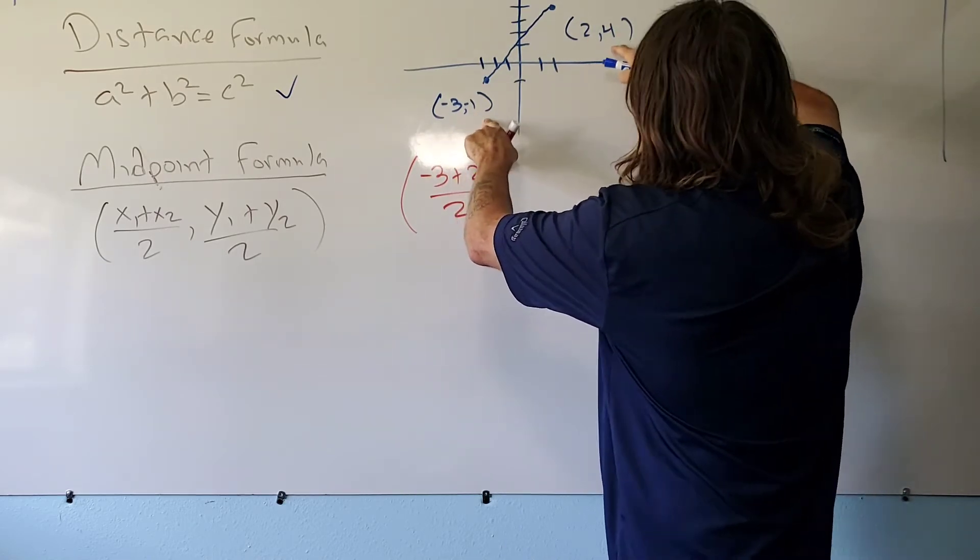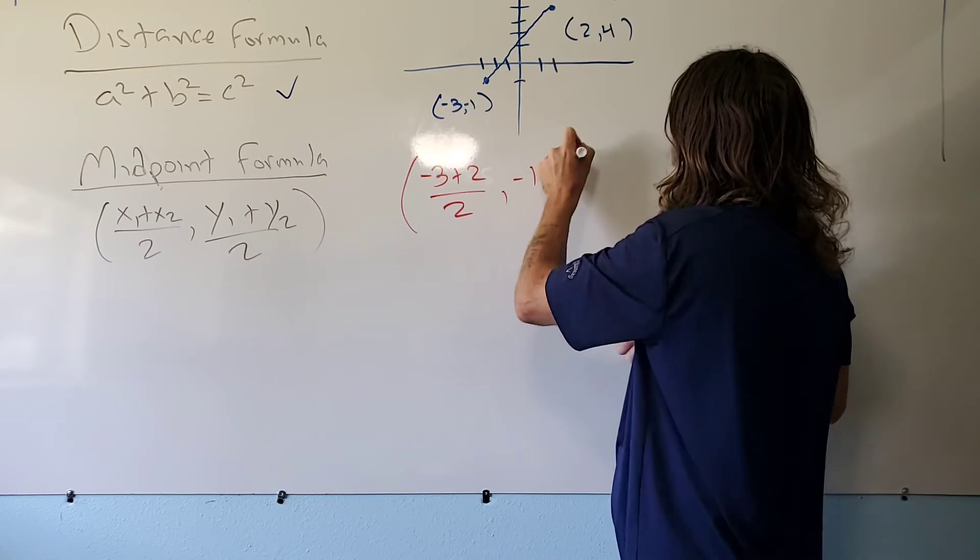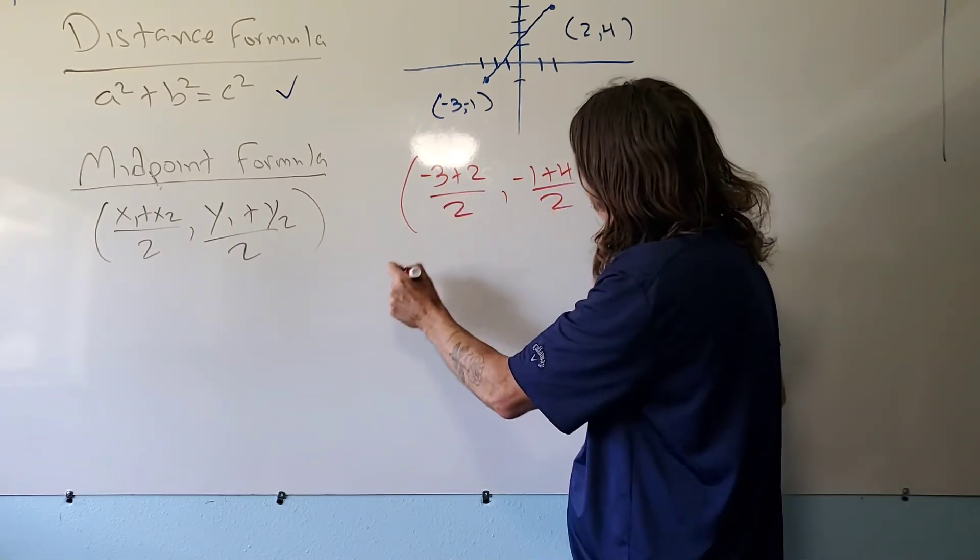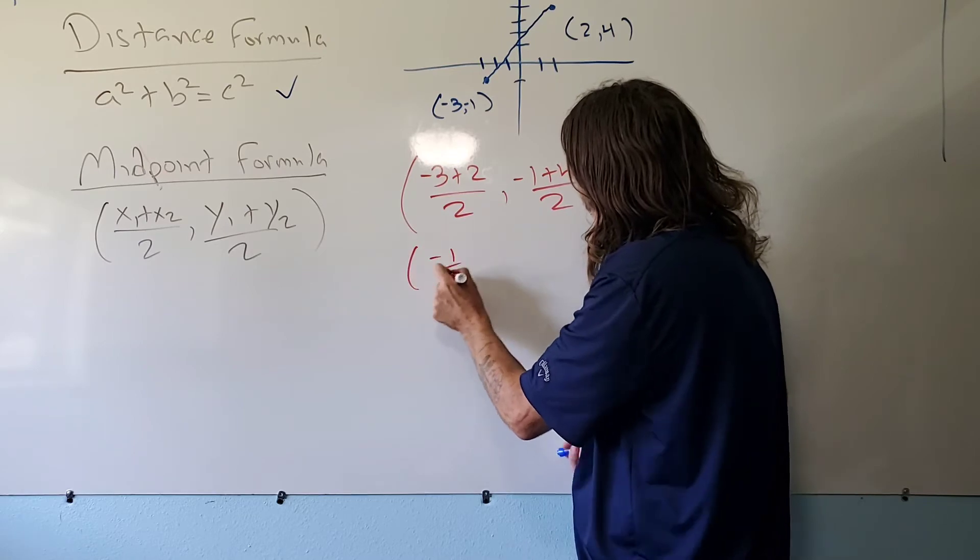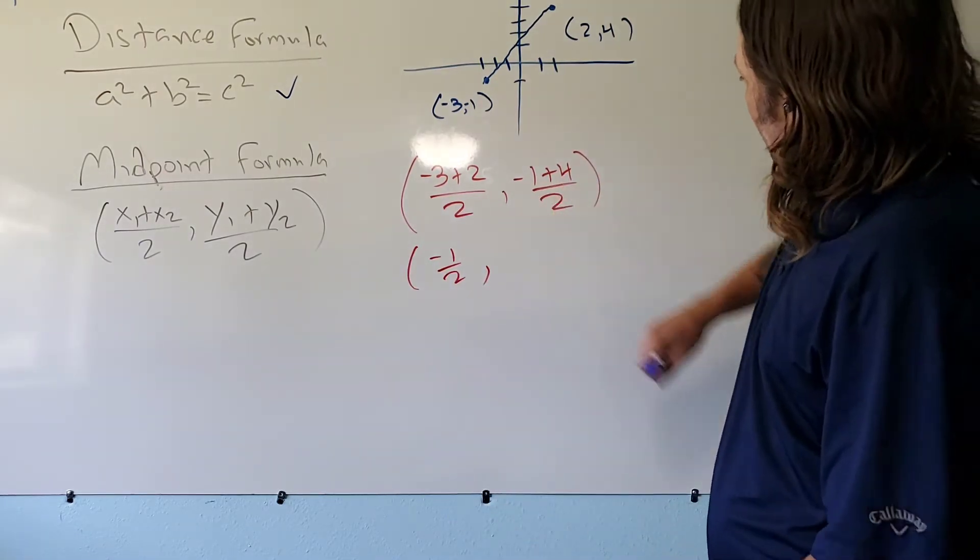You owe three, you have two, and whatever you get, you're going to divide that by two. Those are my x's. Now I move to my y's. I owe a dollar, I have four dollars. So let's see here: minus three plus two, that's going to turn into minus one over two, and this turns into three over two.